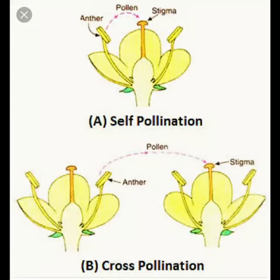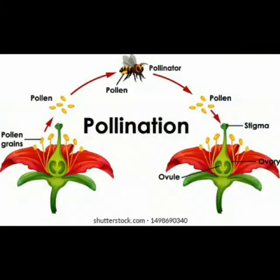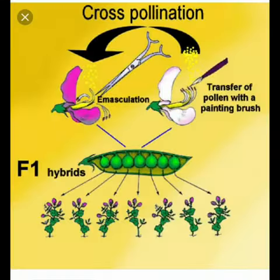Using cross-pollination, scientists produce new plants, new vegetables, hybrid plants, and flowers. These are all being prepared using cross-pollination.